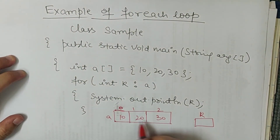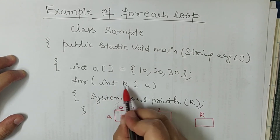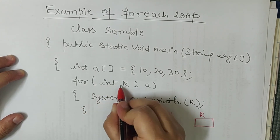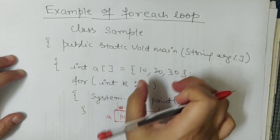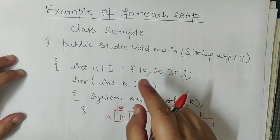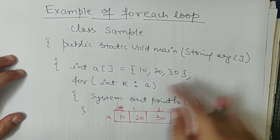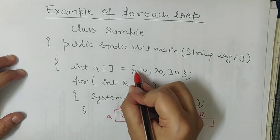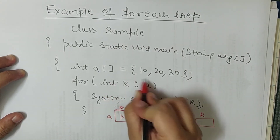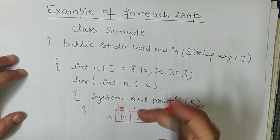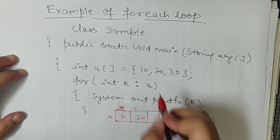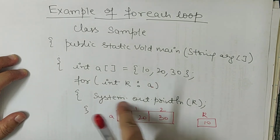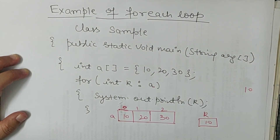Array elements 0, 1, 2 par 10, 20, 30 hain aur int k ek variable declare kiya hai, toh memory mein k variable aa jayega. Ab start karte hain for-each loop. For-each loop kya karega — pehla element: iska kaam hi yeh hai ki array ki collection ko as-is print karo. Start karna hai array se aur tab tak print karte jao jab tak array mein elements khatam nahi ho jaate. Toh yeh sabse pehle 10 ko uthayega, k mein daal dega, aur system.out.println(k) se 10 print ho jayega.